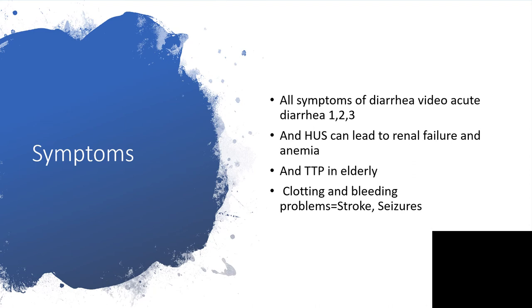With dehydration: dry mouth, dry lips, sunken eyes, sunken fontanel. When there is hemolytic uremic syndrome, that will also lead to hematuria, possible renal failure, and anemia. In the elderly, it can cause thrombotic thrombocytopenic purpura with clotting and bleeding problems — the individual could develop stroke or seizures.